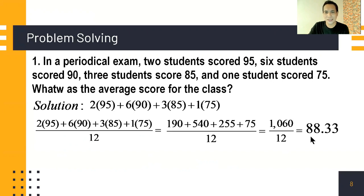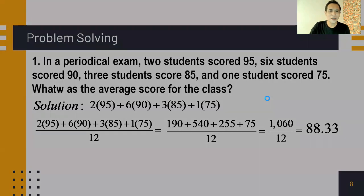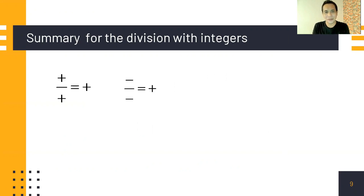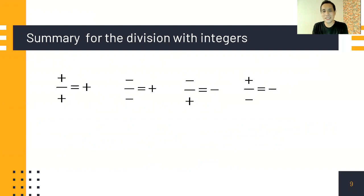The average for the entire class is 88.33, which we can round to 88. To summarize division with integers: positive divided by positive is positive; negative divided by negative is positive; negative divided by positive is negative; positive divided by negative is negative. Remember these rules to solve any division problem with integers. Thank you so much for watching.